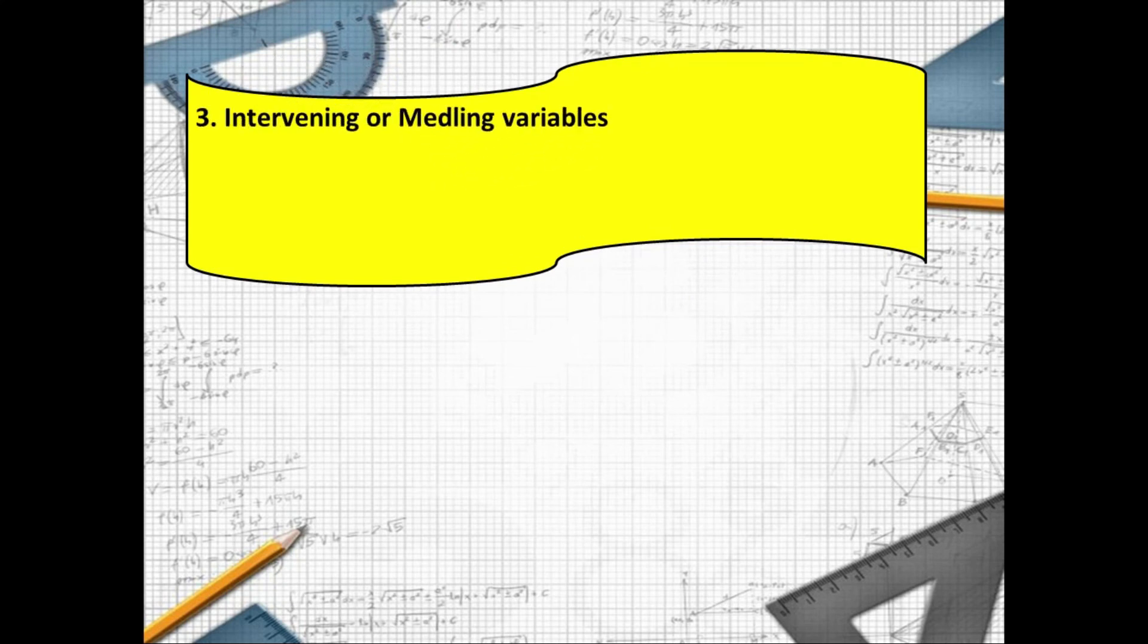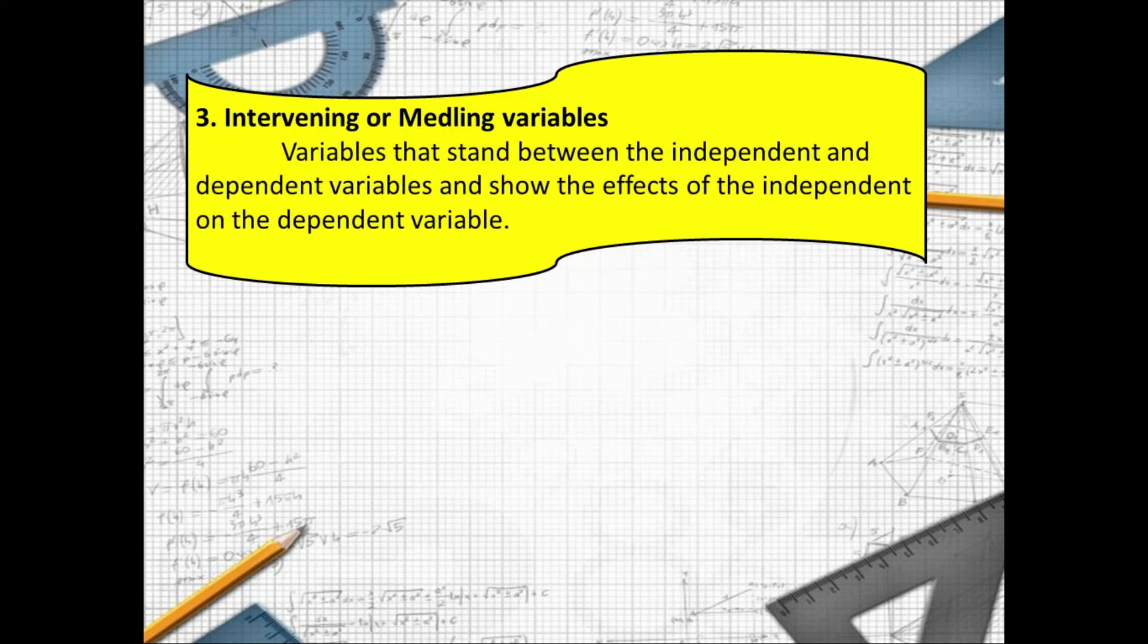So we have also the intervening or meddling variables. Variables that stand between the independent and dependent variables and show the effects of the independent variables on the dependent variables.